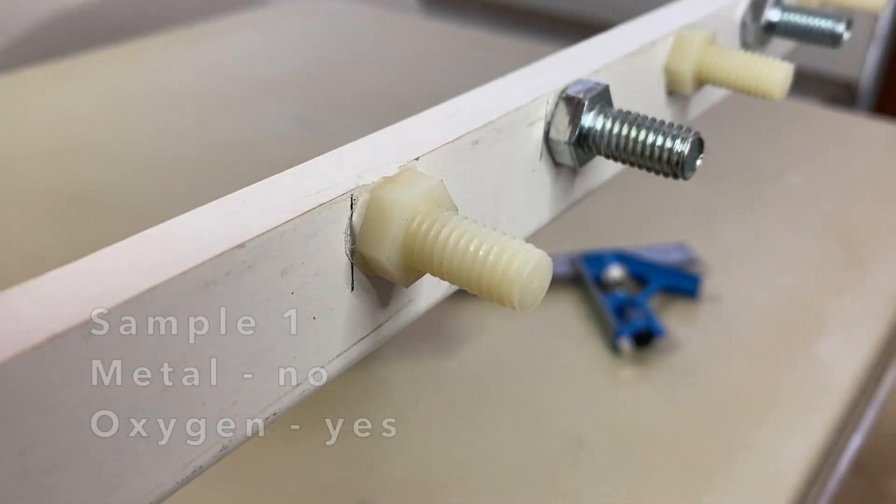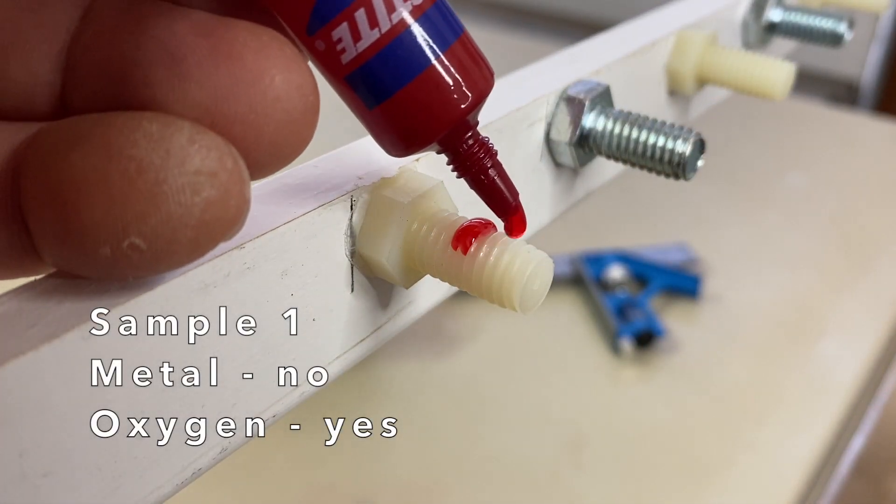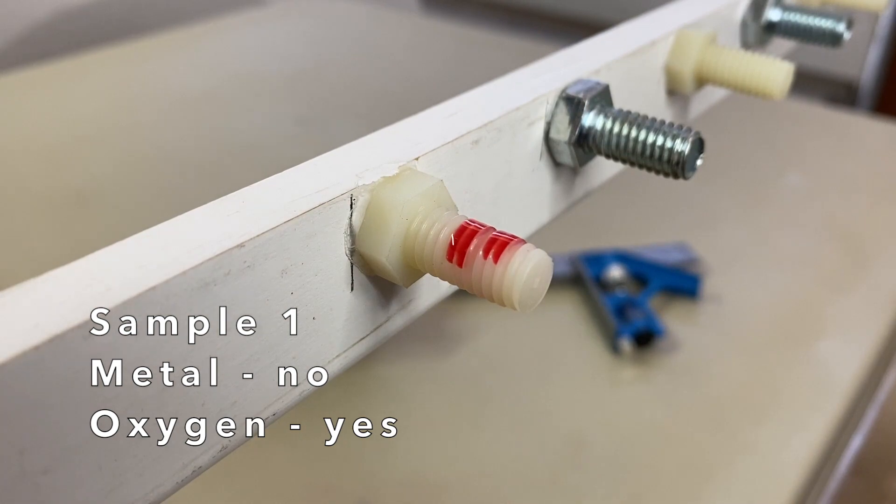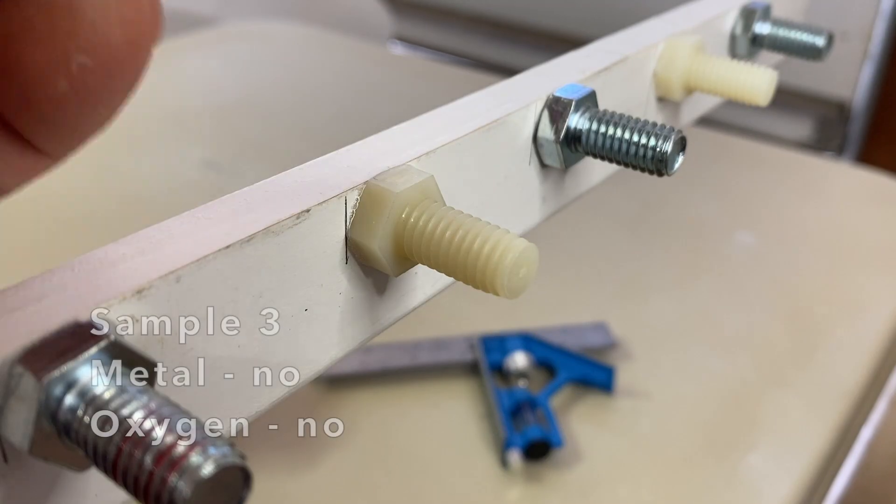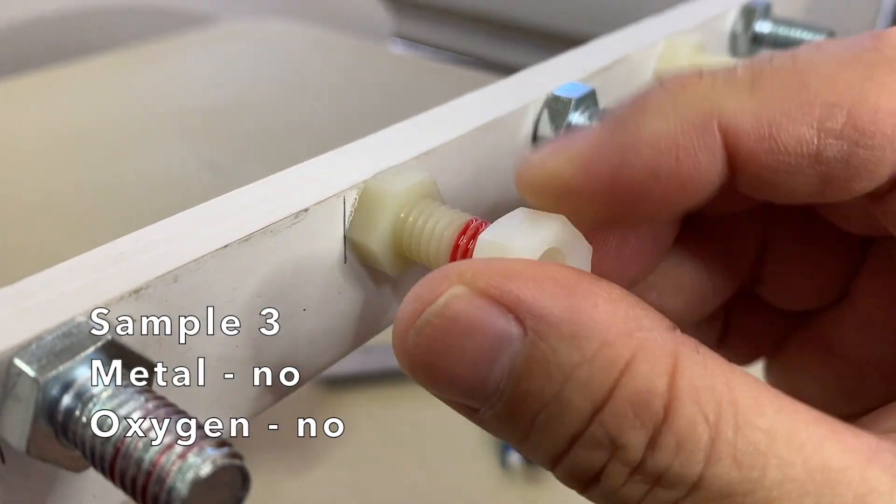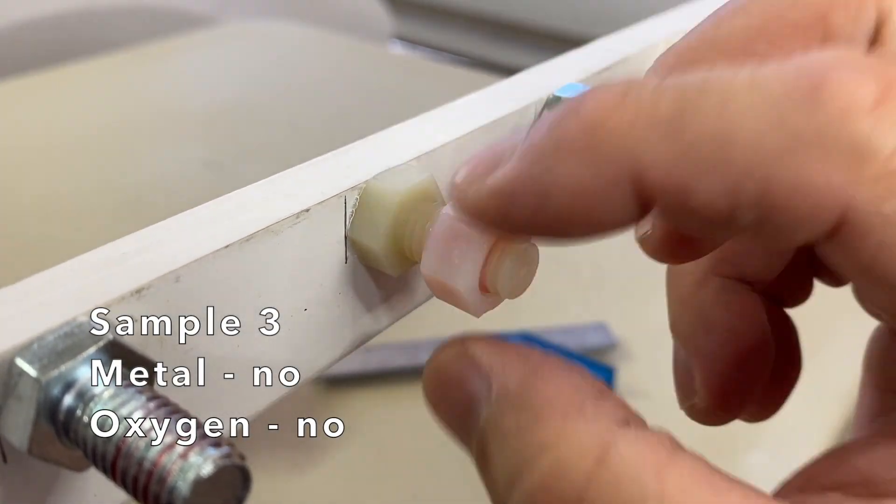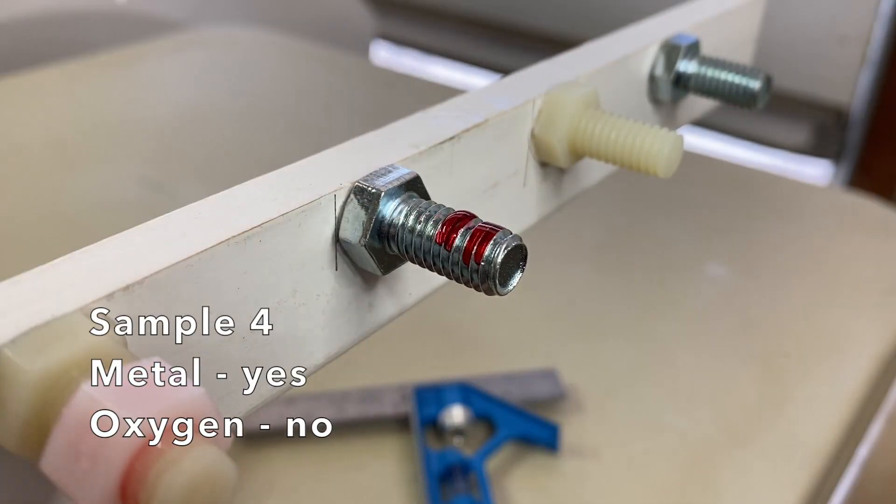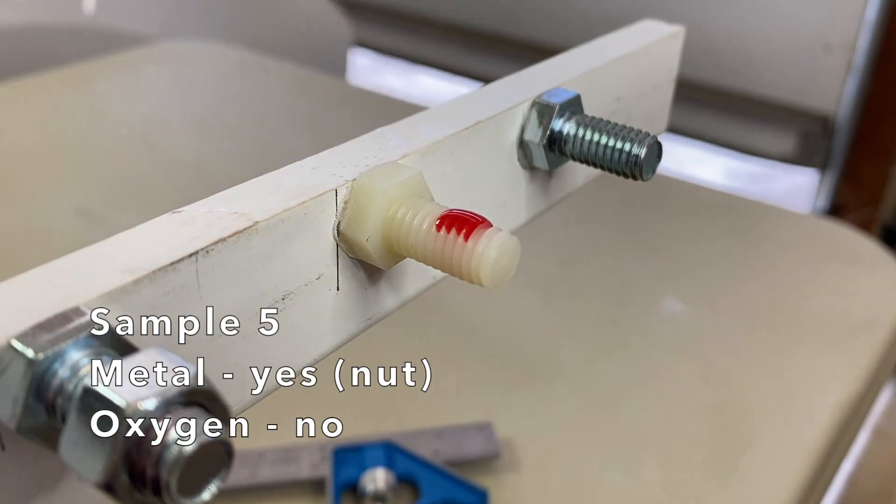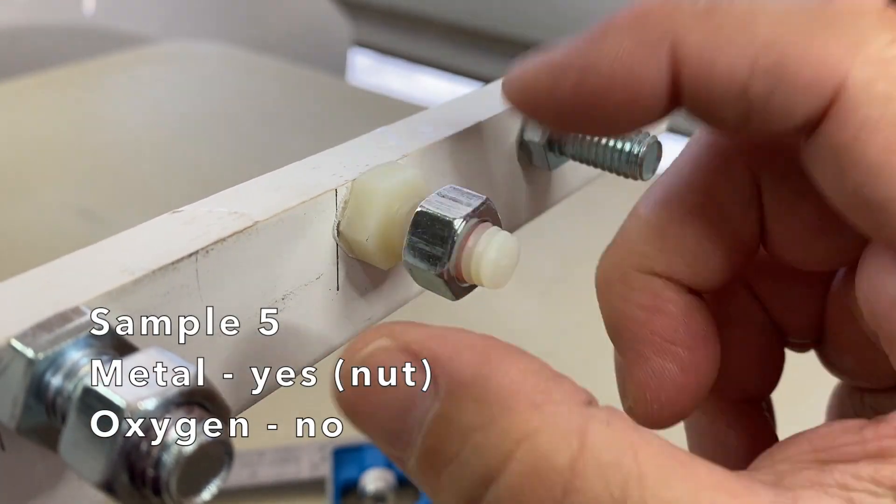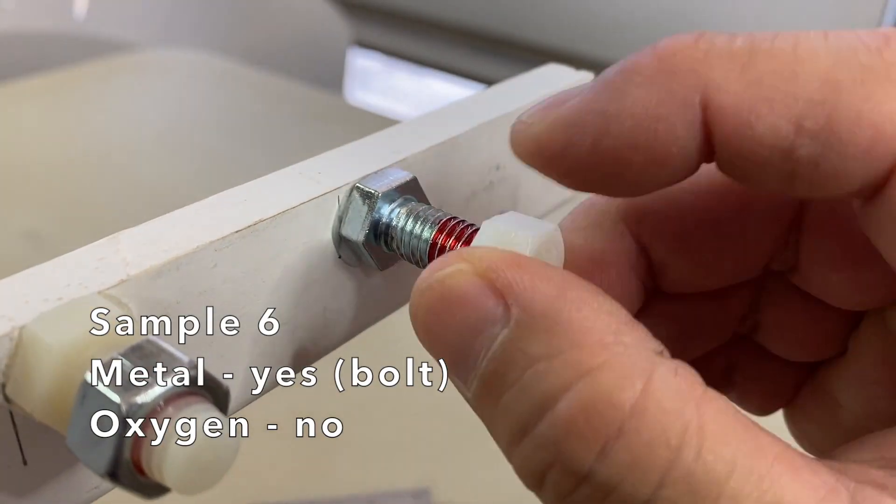Shake well before use. Let's see what happens when the Threadlocker is applied to a non-metal nylon bolt and exposed to oxygen in the air, a metal bolt and exposed to air, between a nylon nut and bolt that cuts off contact with air, similarly between a metal nut and bolt, between a nylon bolt and metal nut, and finally between a metal bolt and nylon nut.